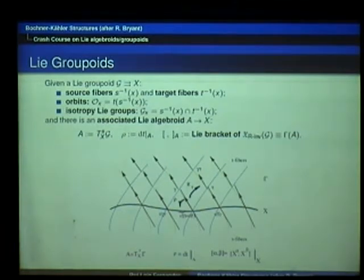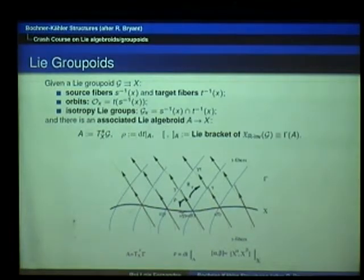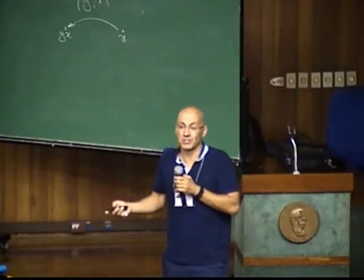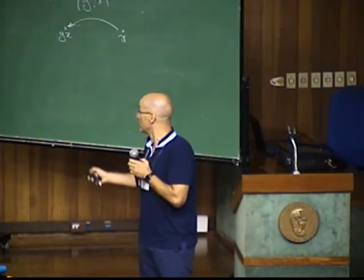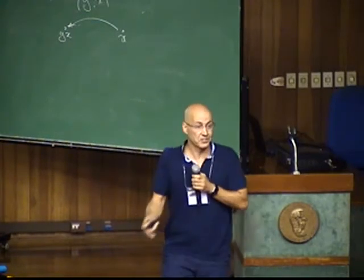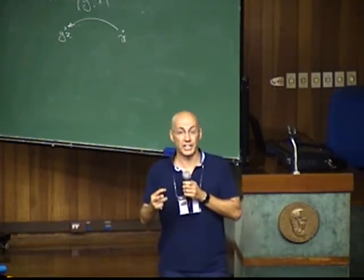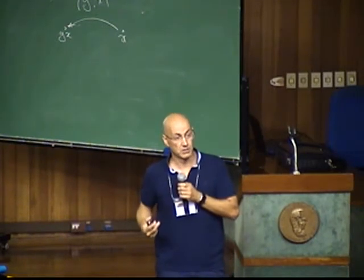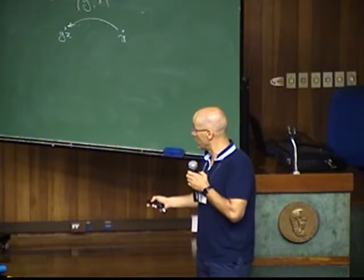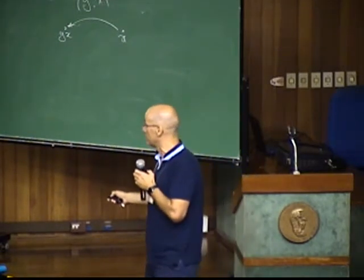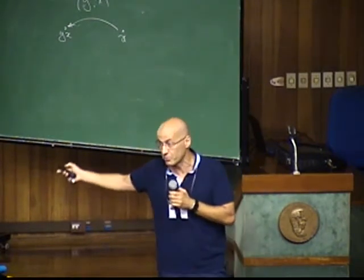You can go to these basic examples and check what is the algebroid of the fundamental groupoid — the answer is just the tangent bundle to X, so the fundamental groupoid integrates the tangent bundle to X. The pair groupoid also has algebroid the tangent bundle to X — just the usual thing that a Lie algebroid can have several Lie groupoids integrating it. For a Lie group we recover the usual construction of the Lie algebra, and for the action groupoid we get the action algebroid.